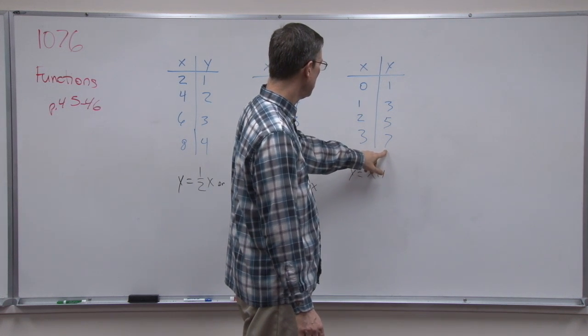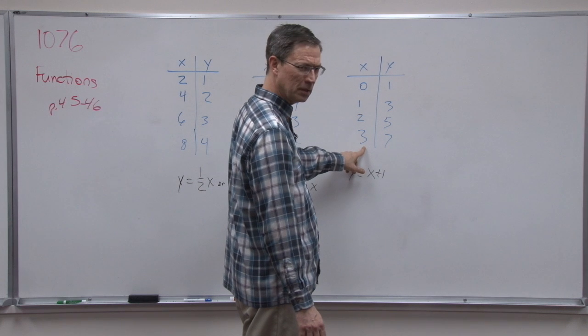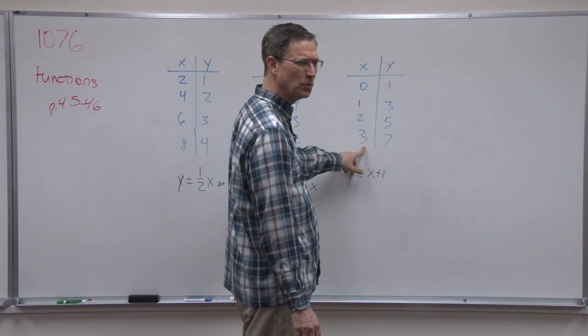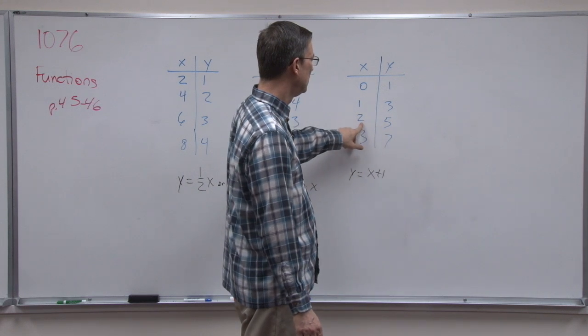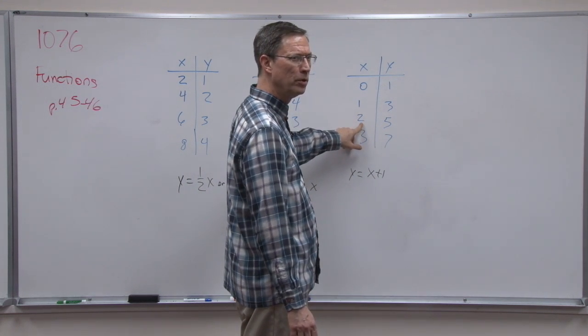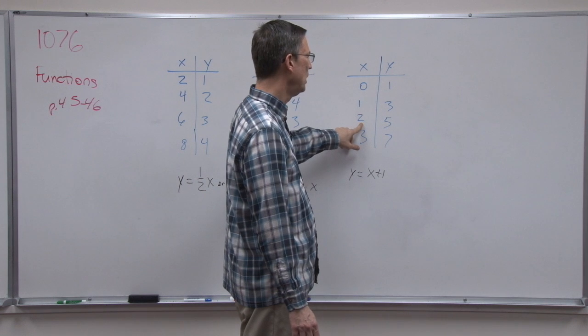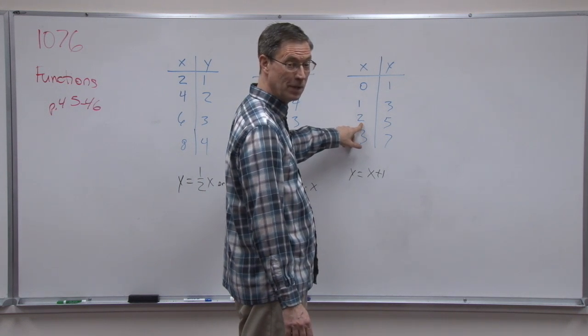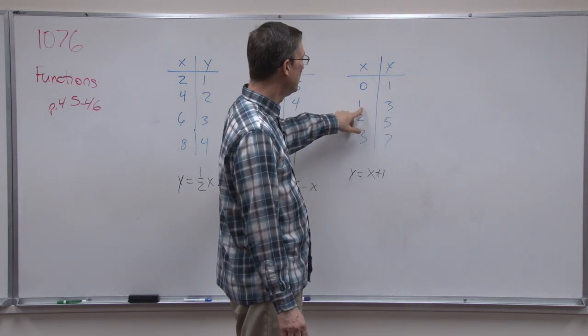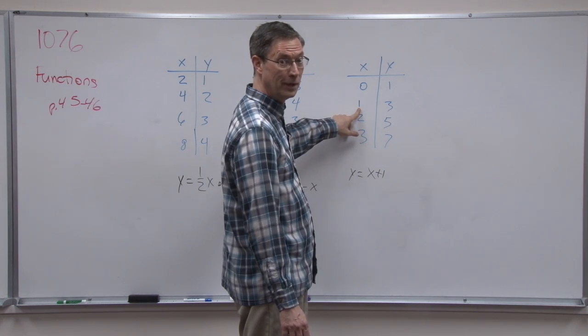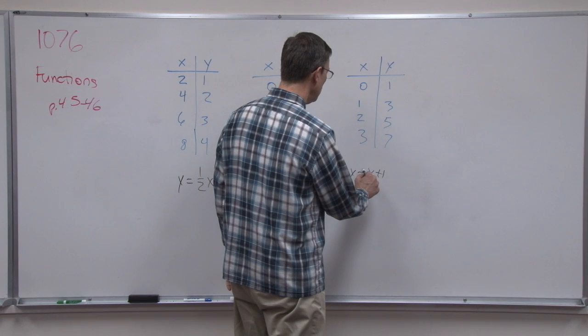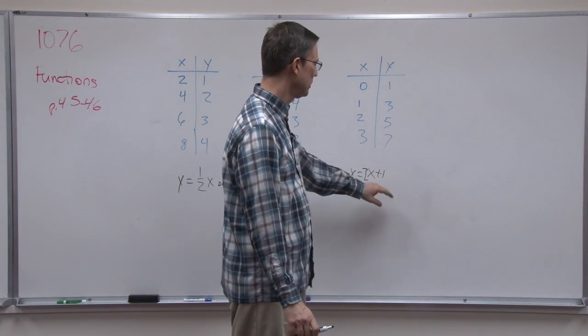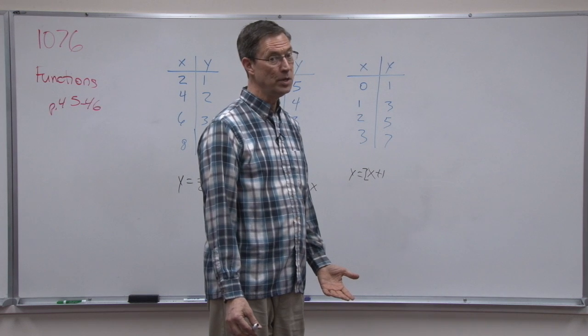This looks like it's double this, twice this, plus 1. 5, 5 is 2 doubled plus 1. I think we're on to something. 3 is 1 more than 1 doubled. Does that work for 0? Let's try it. So I'm going to put a 2 in front of the x. 2x plus 1. Remember, we've got to follow the order of operations.